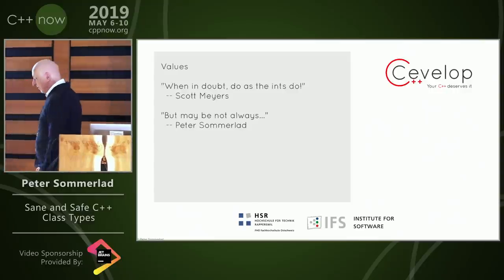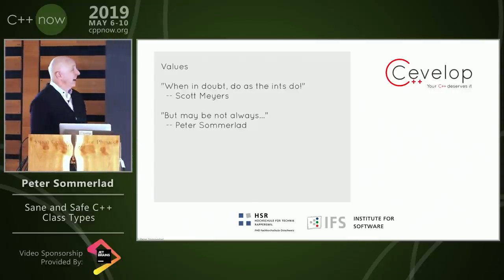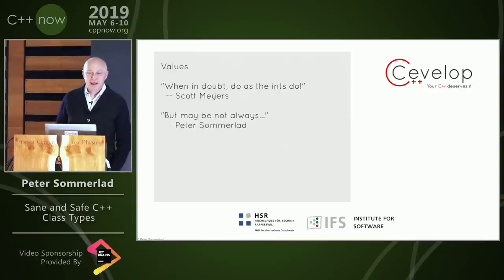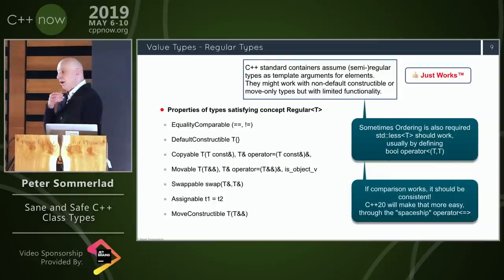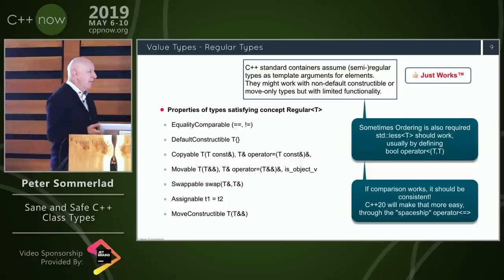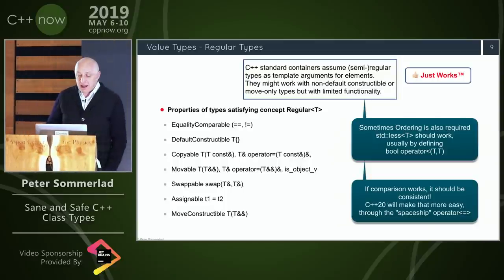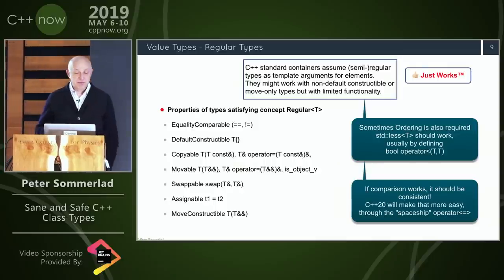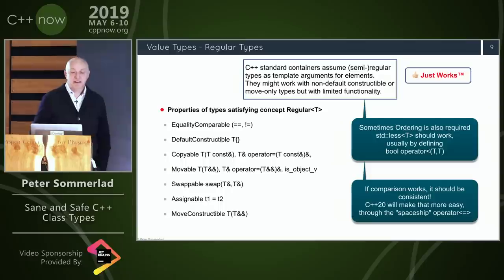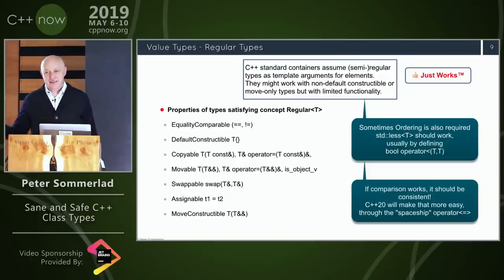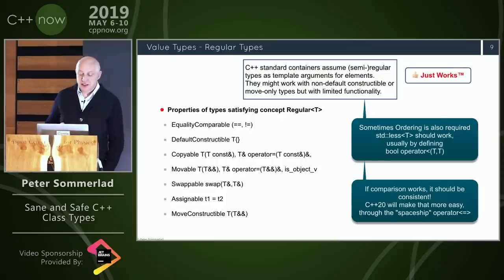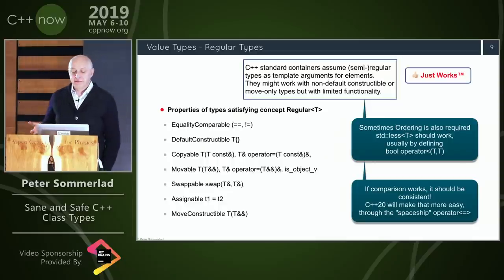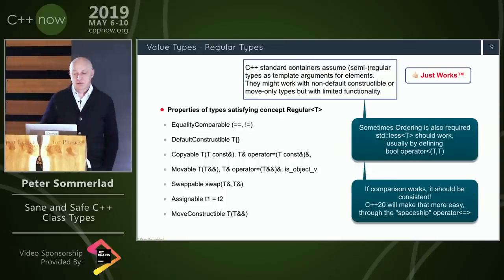Back to class categories — values. Scott Meyers had the nice saying: when in doubt, do as the ints do. Value types — we also have the concept of 'regular type,' which is a value type that includes ordering. A regular type can be compared; if you copy it, the comparison should be equal. It should be default constructable, movable, swappable, assignable, and move constructable. If you don't do anything except for comparison, you get all these operations for free.